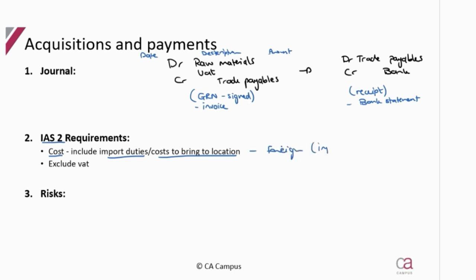So remember now if we're talking about foreign, so now it's importing, you're not going to have VAT, but then you will have to add import duties and so on. And there will now also be a translation that needs to be calculated to determine the actual cost. You would then exclude VAT if it were a local purchase.